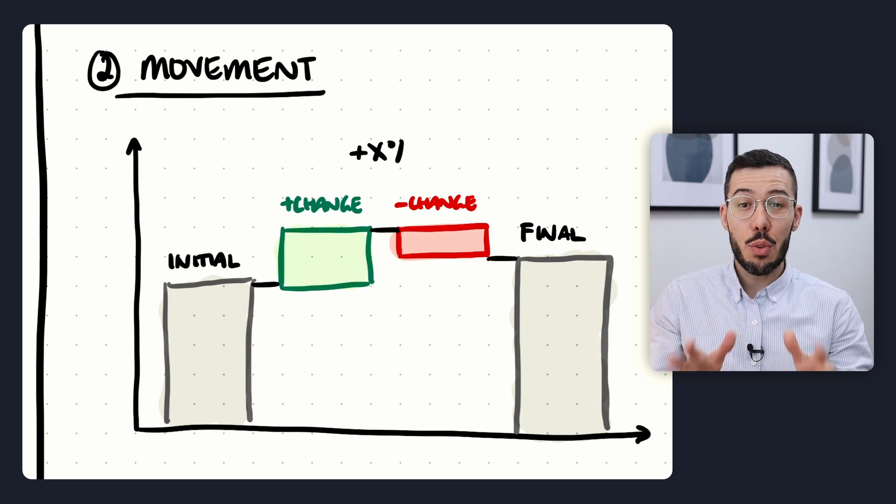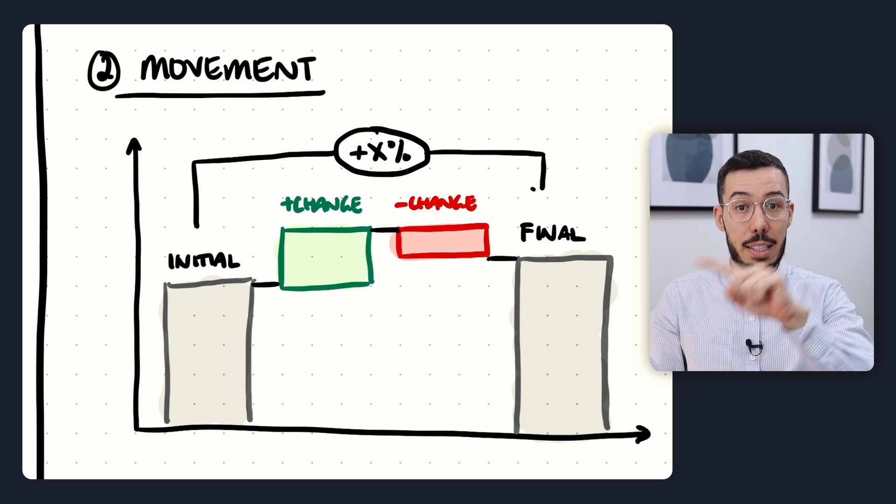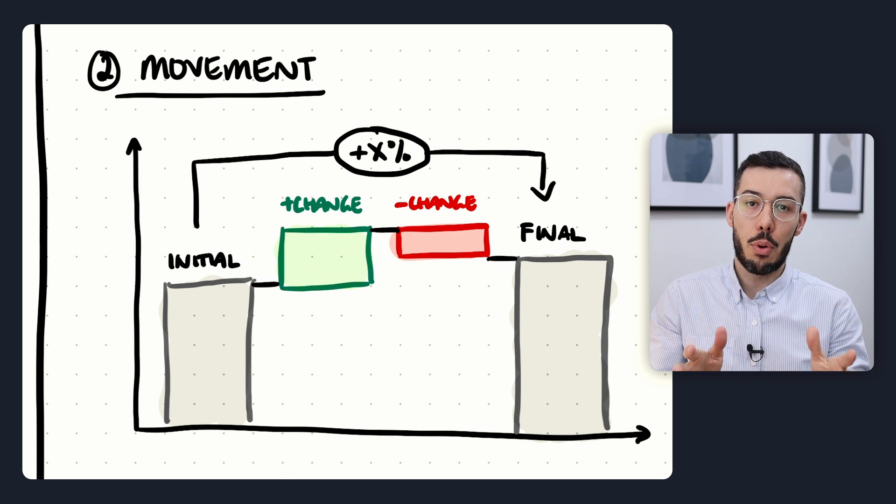One thing you'll often see with movement waterfall charts is a difference arrow. This is important because what you're really doing with this chart is showing the difference from the initial value to the final value. You want to show the drivers causing the movements, but also the overall magnitude of the change.